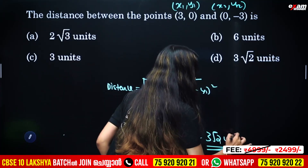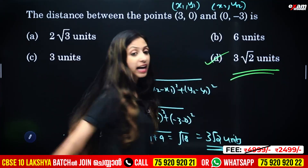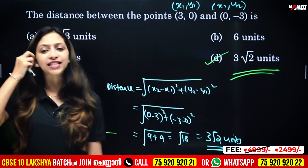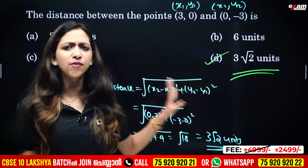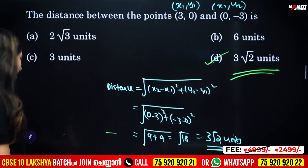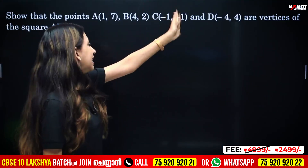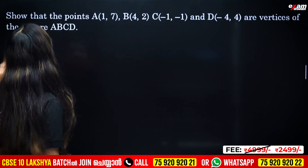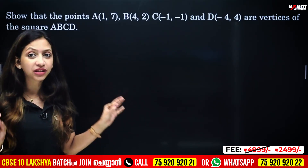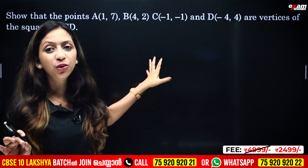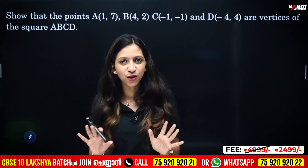The answer is 3 root 2 units — a simple question using the distance formula. The next question: show that points A, B, C, D are the vertices of a square. We have two coordinates for each vertex. We will use the distance formula to find all sides: AB, BC, CD, and AD.